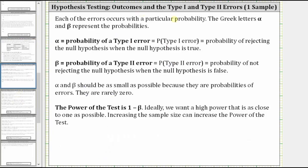Each of the errors occurs with a particular probability. The Greek letters alpha and beta represent these probabilities. Alpha is equal to the probability of a type one error, which is the probability of rejecting the null hypothesis when the null hypothesis is true. Beta is equal to the probability of a type two error, which is the probability of not rejecting the null hypothesis when the null hypothesis is false. Alpha and beta should be as small as possible because they are probabilities of errors.